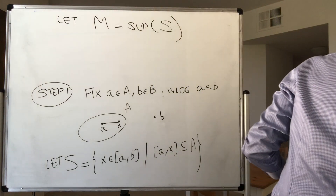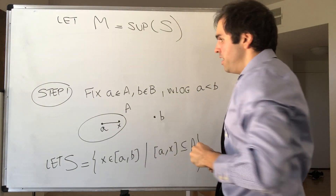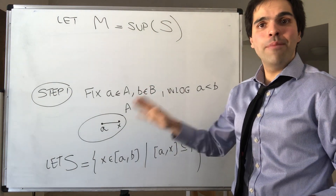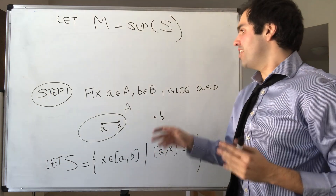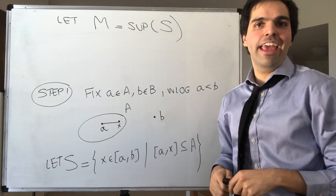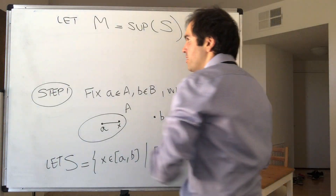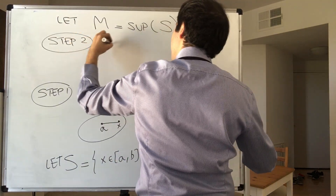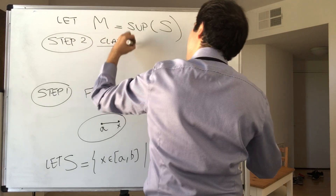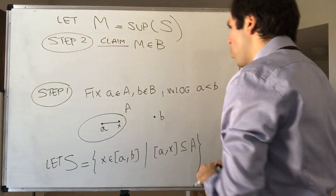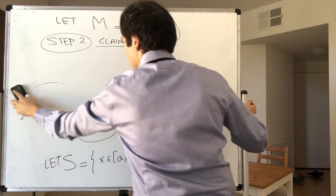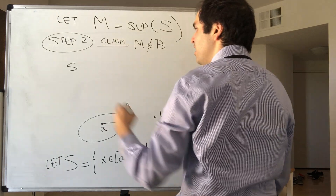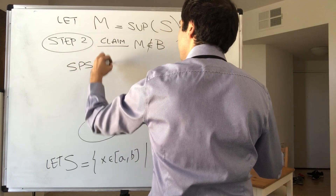The proof relies on the following idea: we will show that M is not in B and M is not in A, which is a contradiction because the union of A and B is ℝ. So step two: claim M is not in B. Suppose M is in B.